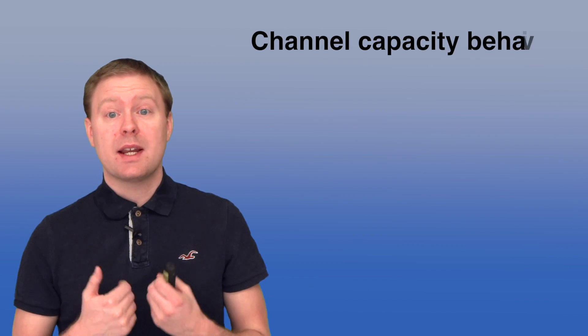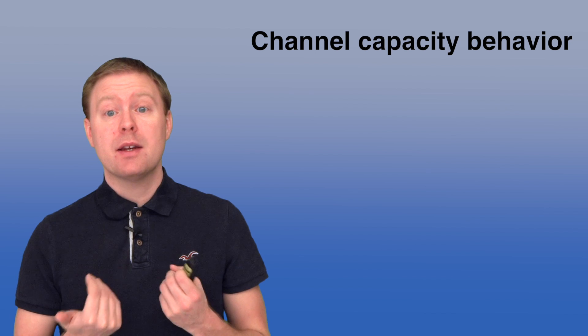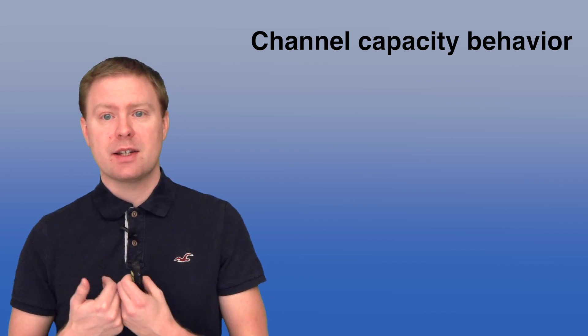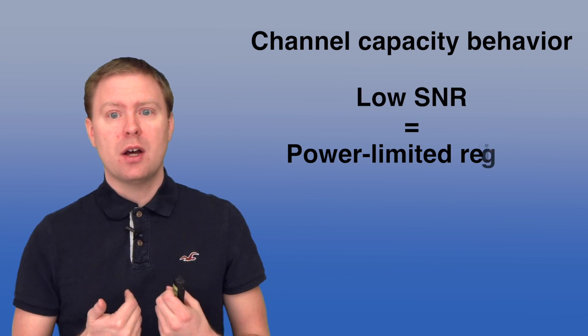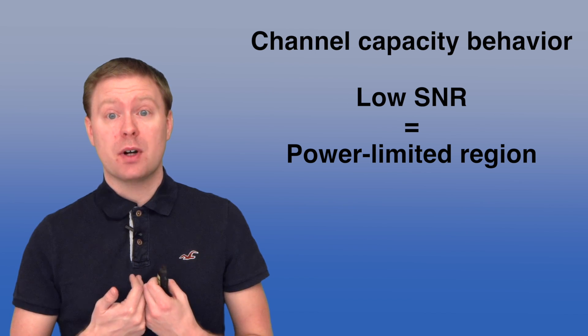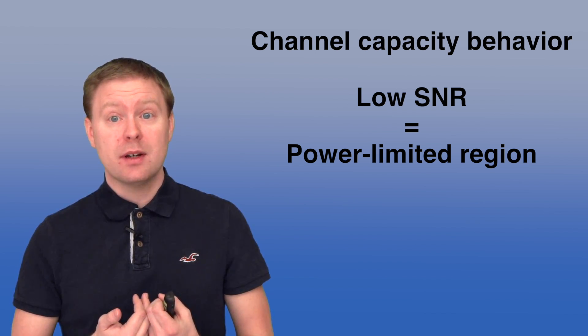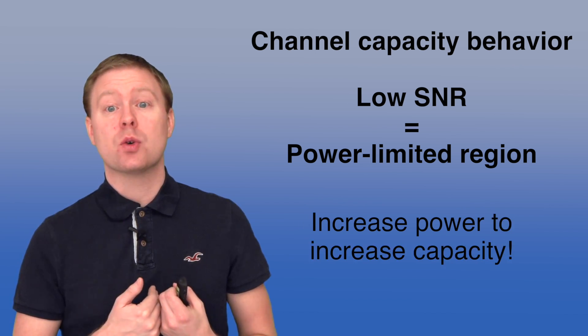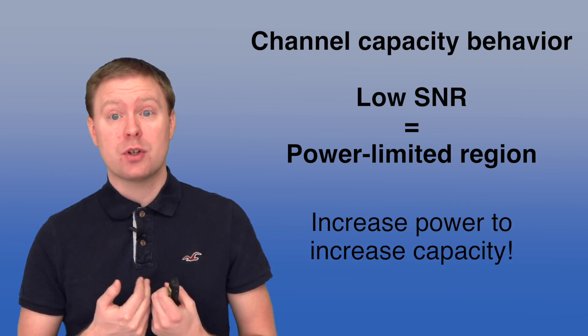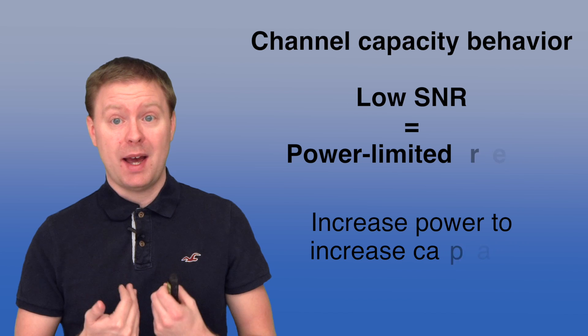So in summary, what can we say about the capacity behavior? Well, it depends on if we are in low or high SNR regions. So at low SNR, the capacity grows very quickly when we are changing the power. That's why we call it the power limited region, and we observe an almost linear growth rate as we change the power. So that is what we should do to improve capacity.